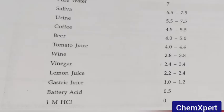Wine is 2.8 to 3.8. Vinegar is 2.4 to 3.4. Lemon juice is 2.2 to 2.4. Gastric juice is 1 to 1.2. Battery acid is 0.5, and HCl is 0. So these are the common examples of pH in our daily life.